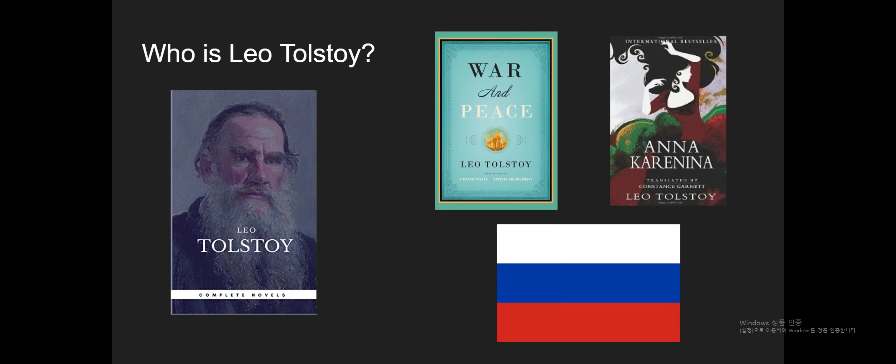So first, who is Leo Tolstoy? His birthday is September 9, 1828. Leo Tolstoy was born in Tula province, which is located in Russia. In the 1860s he wrote his first great novel, War and Peace.